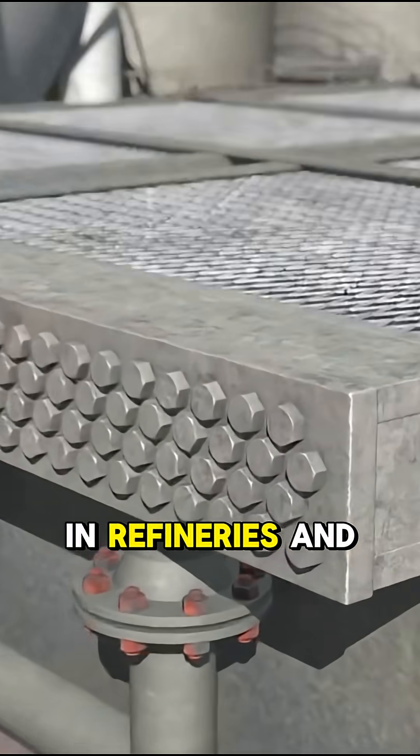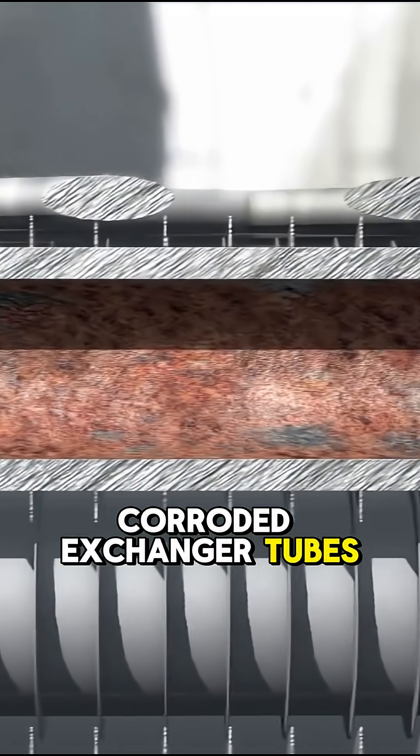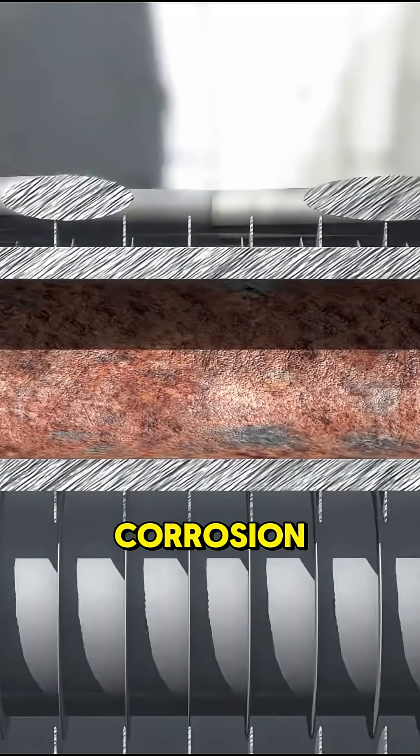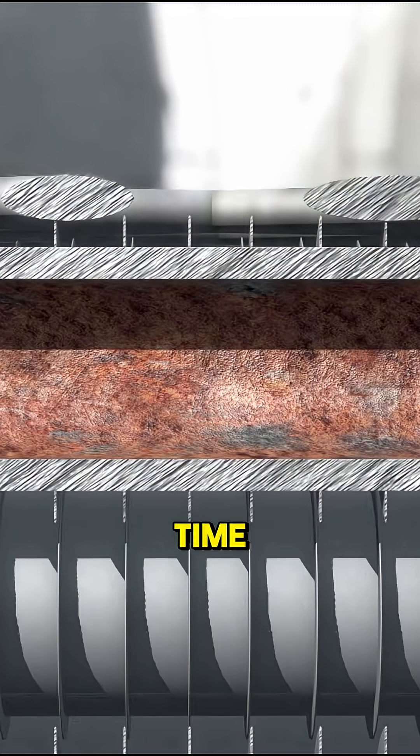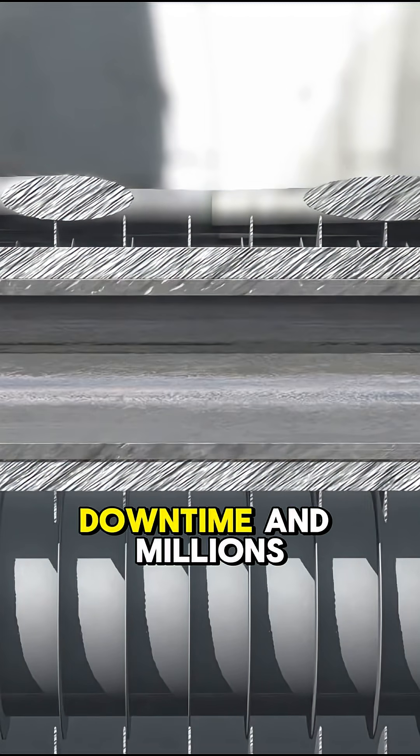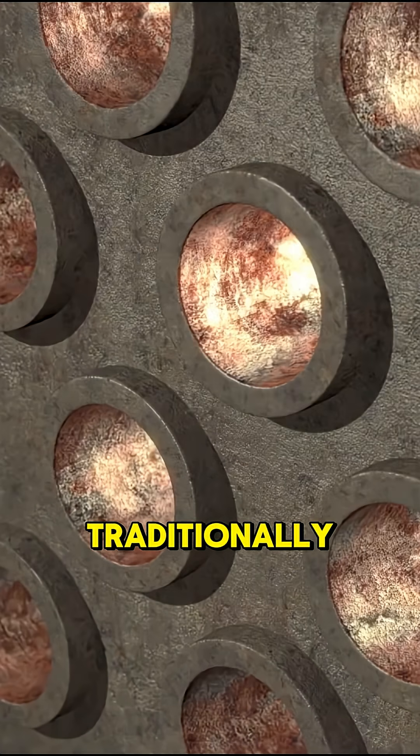In refineries and petrochemical plants, corroded exchanger tubes are a big deal. Stress cracking, erosion, corrosion. If you don't catch it in time, you're looking at downtime and millions in loss.